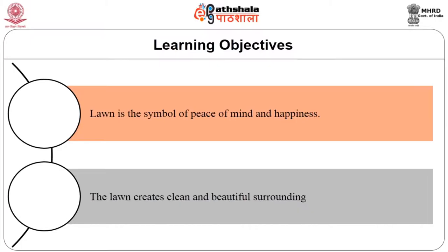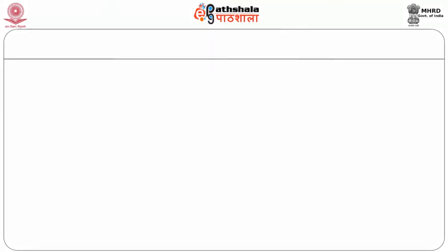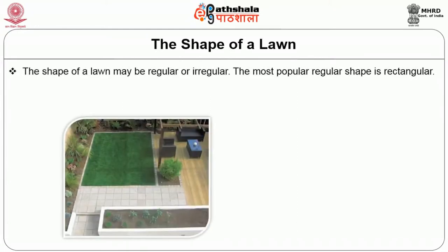The position of lawn may vary depending upon the layout of the garden. Next we will see the objectives. The main objective of the lawn is creating a beautiful landscape design. Lawn is a symbol of peace and happiness. The lawn creates clean and beautiful surroundings. The shape of the lawn may be regular or irregular. The most popular regular shape is rectangular.